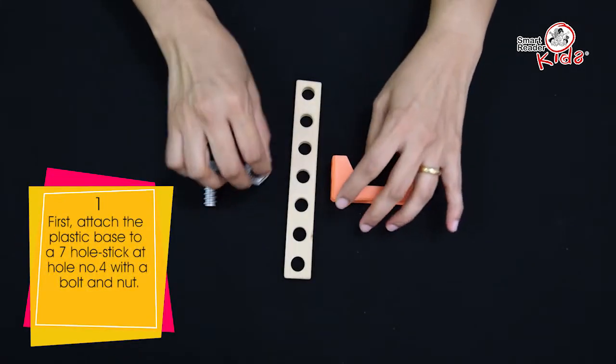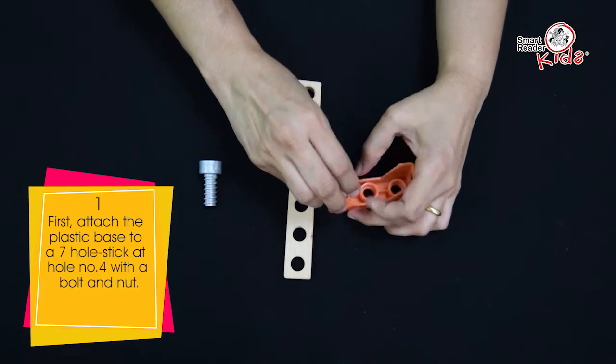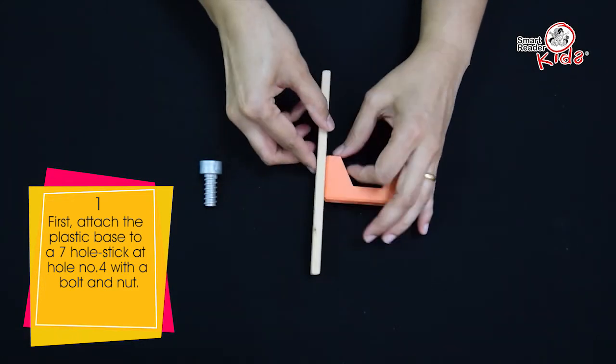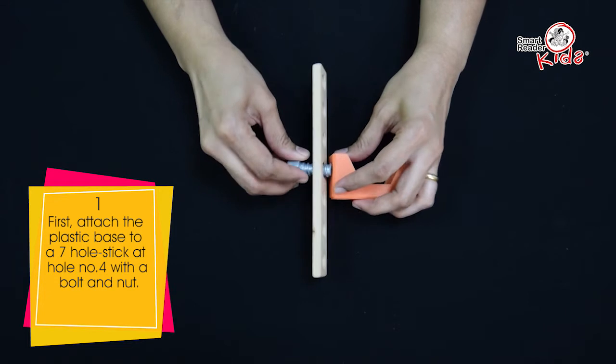First, attach the plastic base to a 7-hole stick at hole number 4 with a bolt and nut.